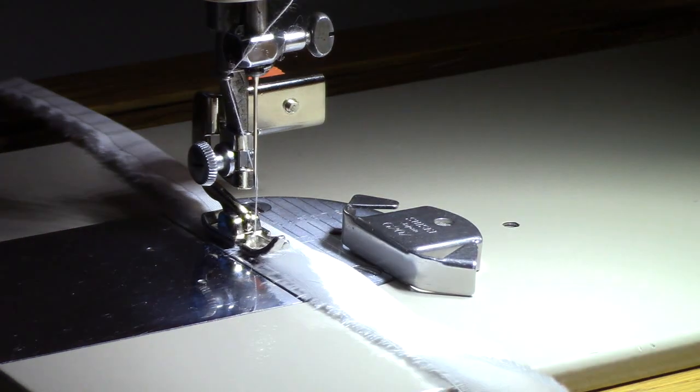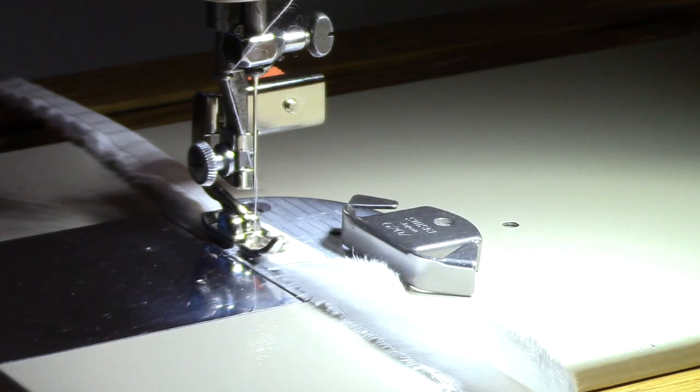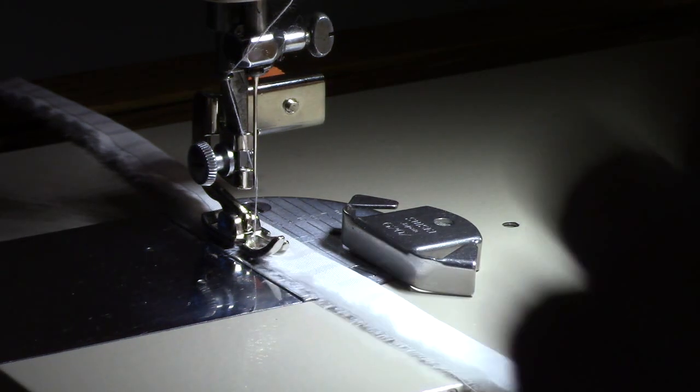The only time it gets a little strange is if you continue to use the zigzag foot. If you do that, then you realize you're sewing on the left hand side. But if you change it to the straight stitch foot, you won't notice the difference.